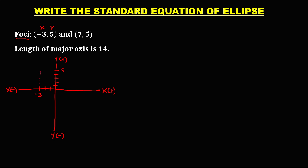This is now the first focus point plotted. The other foci coordinate has x as positive 7 and y as positive 5. Connect and mark this as the other point of the foci.